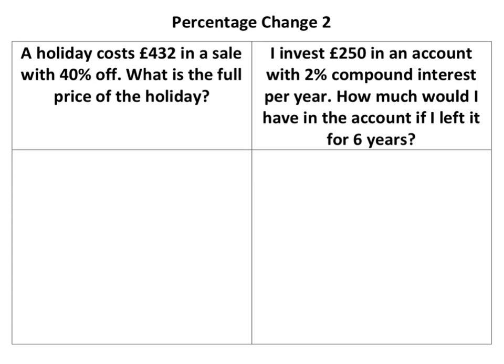What is the full price of the holiday? We've got an amount after a percentage change, and we know that £432 is 60% of the original — of whatever that full price of the holiday was. So if I was going to set out the calculation, it would be: original price times 0.6.